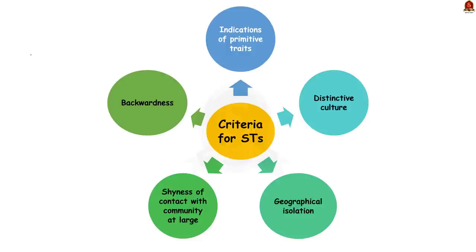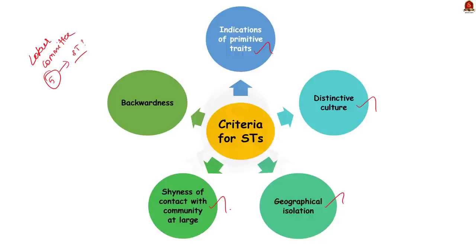As per the Lokur Committee, there are five basic criteria for deciding if a particular tribe can be classified as a scheduled tribe: first, indications of primitive traits; second, distinctive culture; third, geographical isolation; fourth, shyness of contact with the community at large; and fifth, backwardness. If these criteria are present, then any community can be called a scheduled tribe. But there are some drawbacks associated with these criteria.